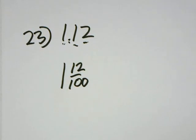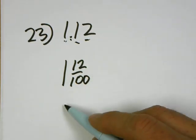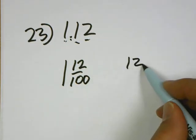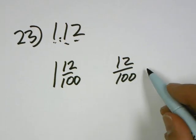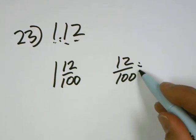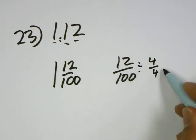Now, they want you to write this in the simplest terms, so we have to simplify 12 hundredths. Greatest common factor is 4, so we divide the numerator and the denominator by 4, and we get 3 fourths.